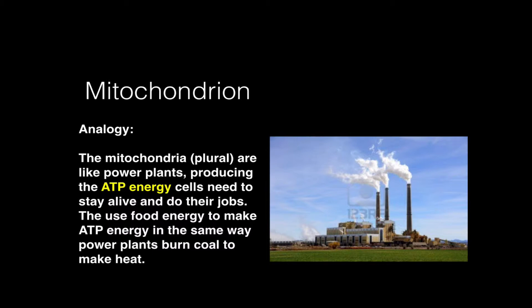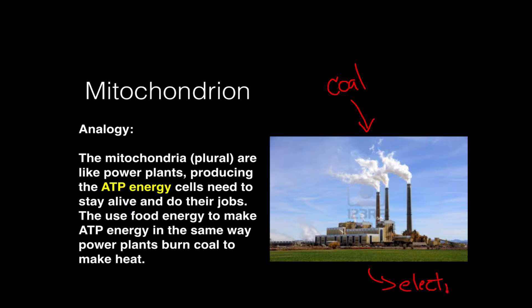Another analogy you may have heard is the idea of mitochondria being like a power plant. This power plant is burning coal and converting it into heat. The heat is used to boil water, the steam is used to make a turbine spin, and the spinning turbine generates electricity. Just as this power plant takes in energy in the form of coal — a popular fossil fuel, especially here in Virginia — it puts out electricity. And in the process of making electricity, it also puts out a waste gas, carbon dioxide, mixed into the smoke coming out of the stacks.